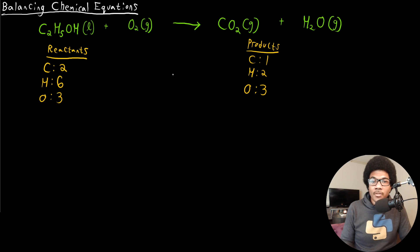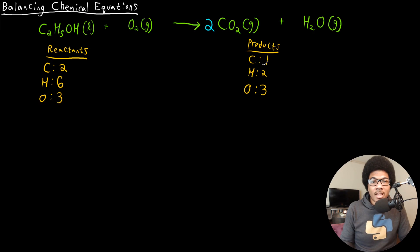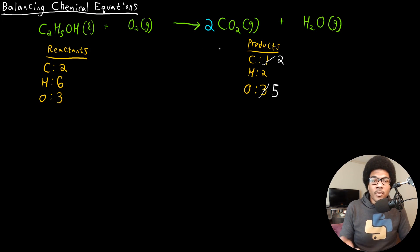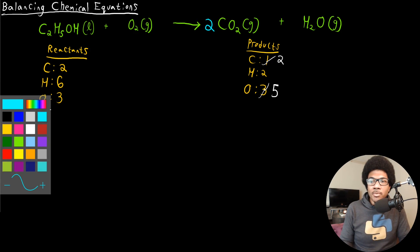The first thing I'm going to do is note the imbalance between the carbons — two on the reactant side, one on the product side. To solve that imbalance, I'm going to add a two in front of CO2. Now we update our products: we have two carbons on this side, but we don't just change the carbons — we also change the oxygens. Two times two is four, so now we have five oxygens on the product side. So even though we solved one imbalance, we created a new one.